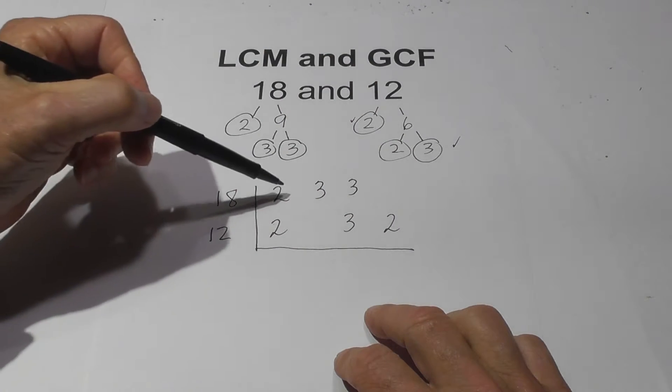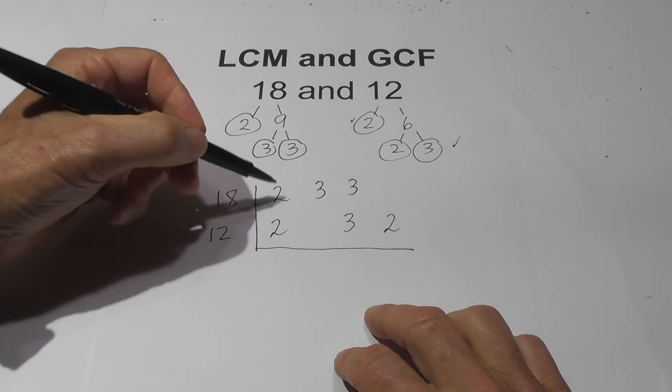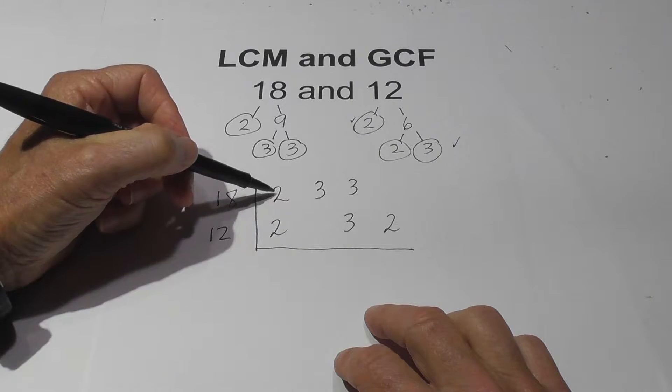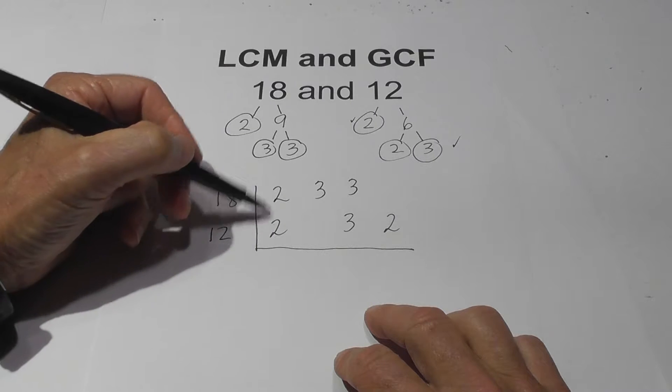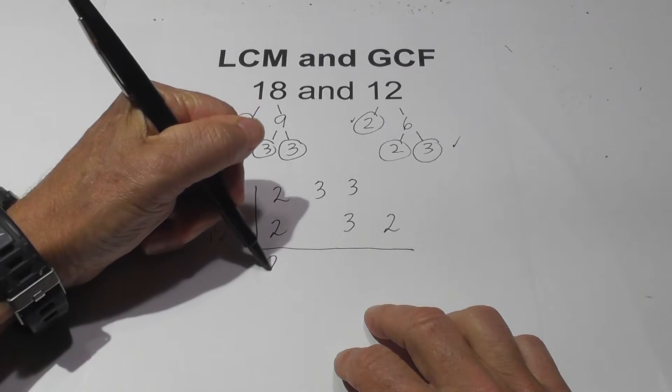Now for the LCM basically you multiply these numbers together but you have one exception. If you have two of the same numbers, so in this case you have 2's in this column, then you just bring down one.